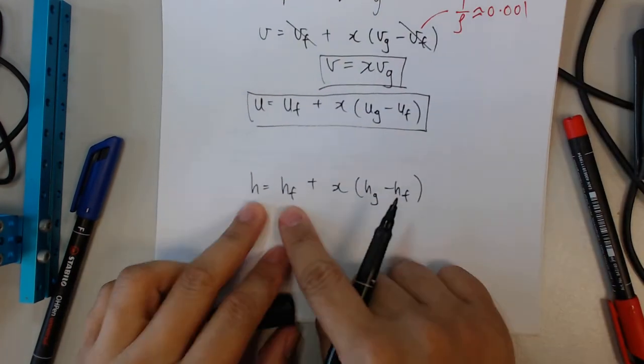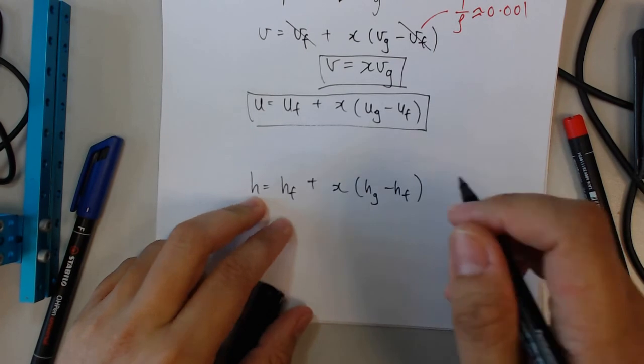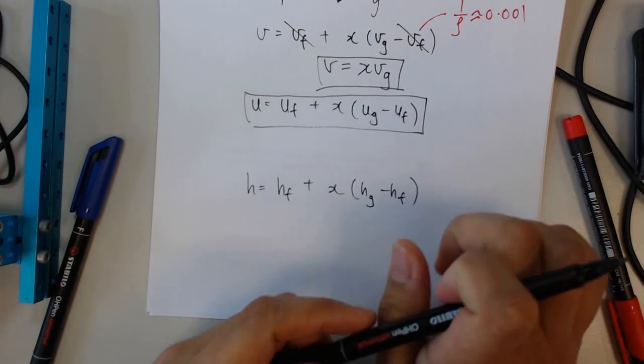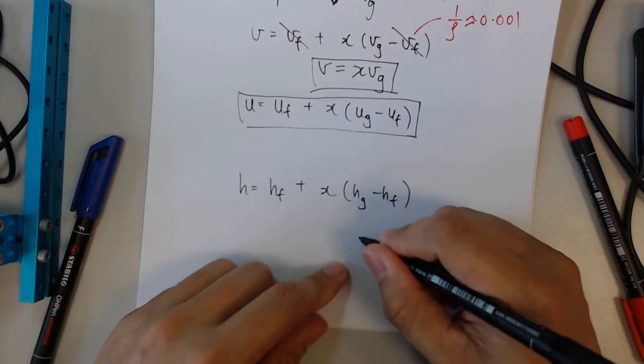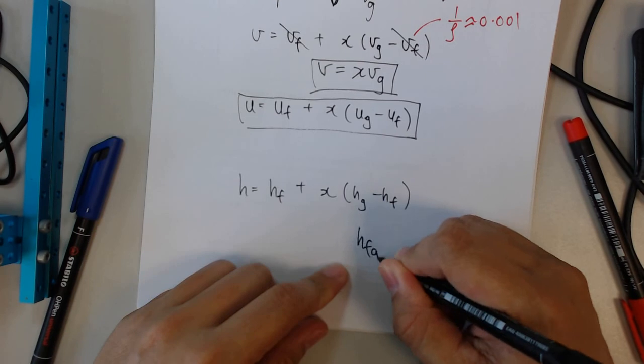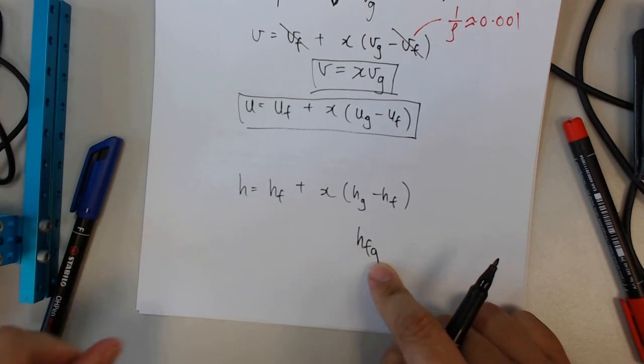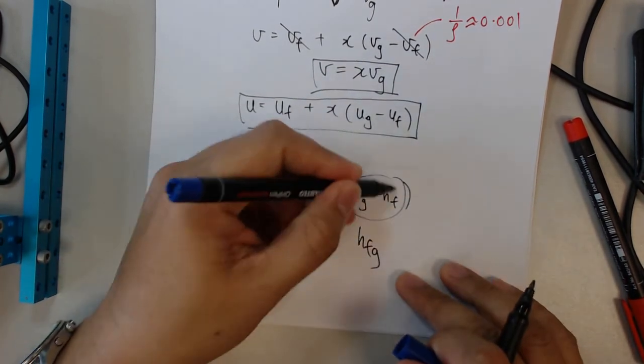Okay, now for H enthalpy, same format, but this time, you know that in your steam tables, there is a column called Hfg. So in fact, Hfg is Hg minus Hf.